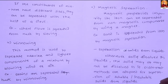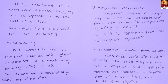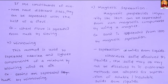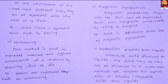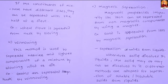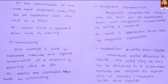Winnowing is the method used to separate heavier and lighter components of a mixture by blowing wind or air. For example, grains are separated from their husk by winnowing.